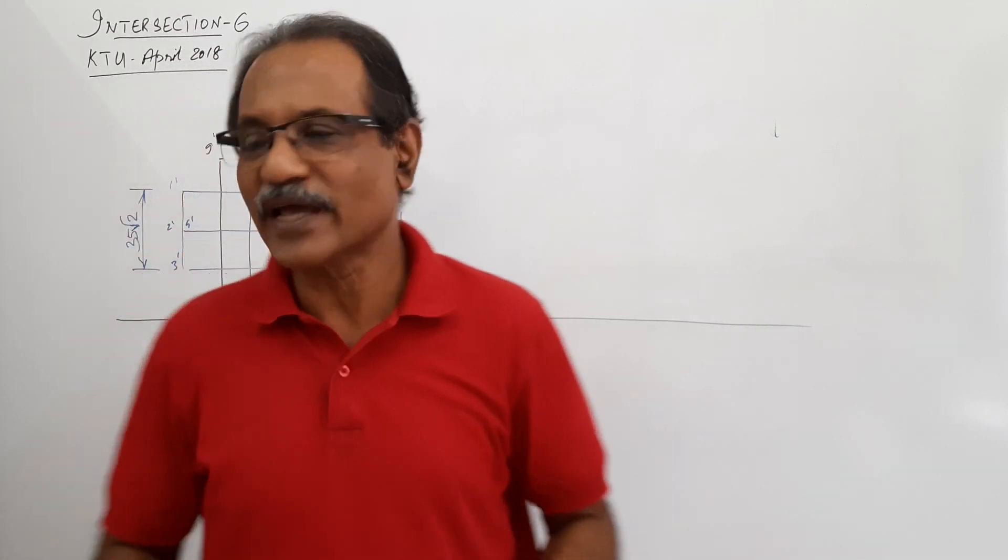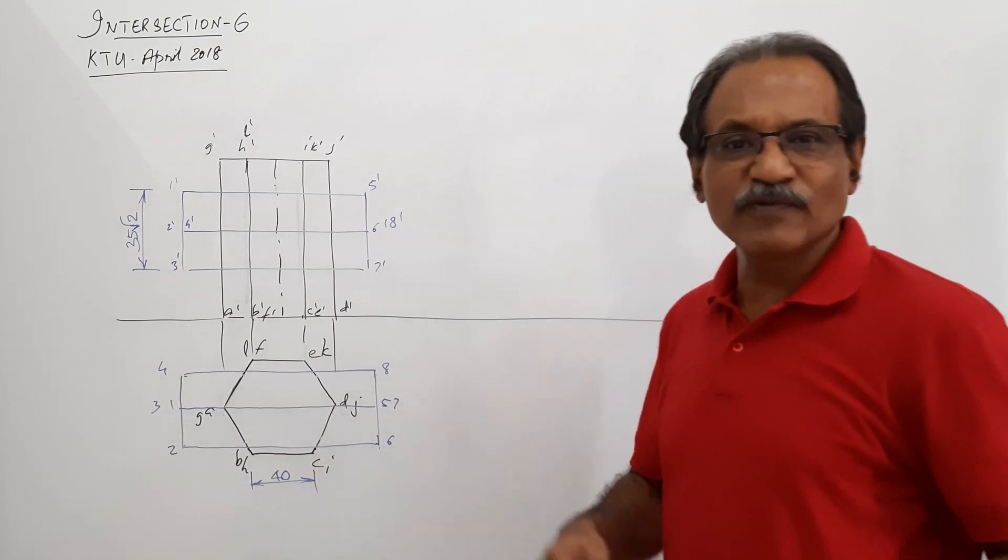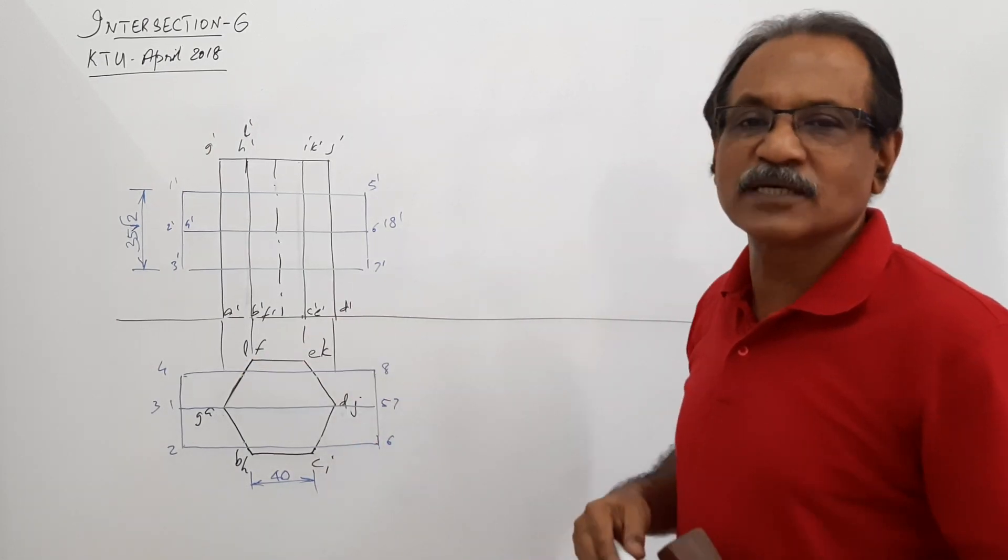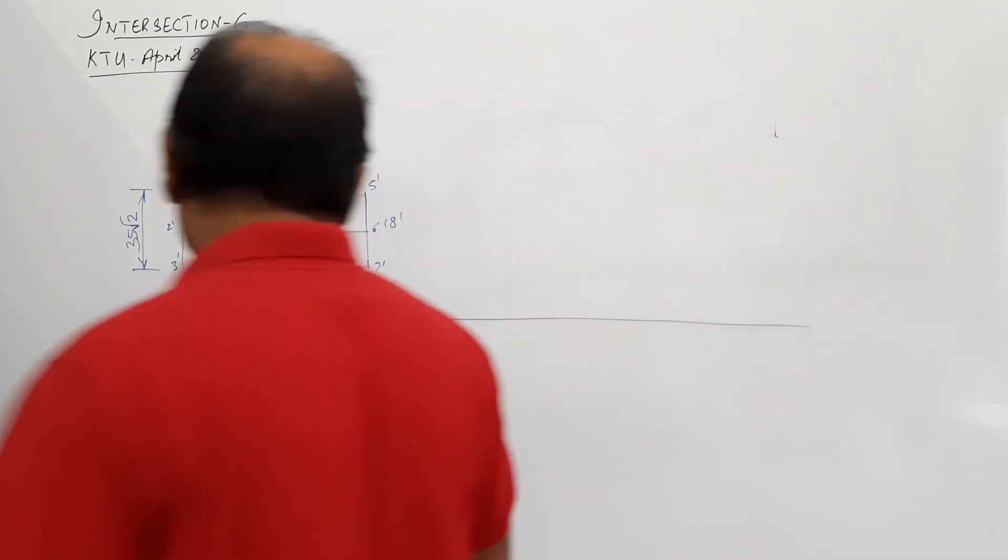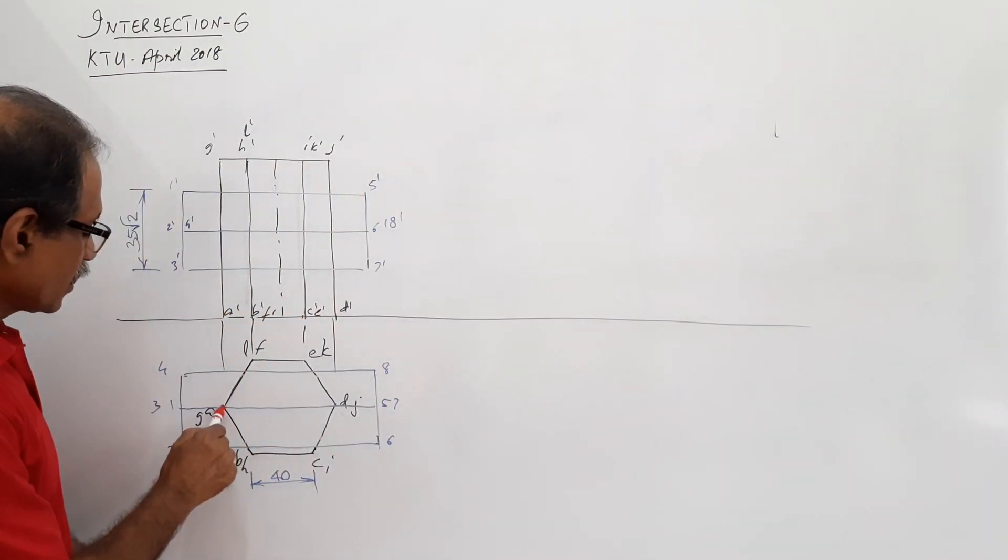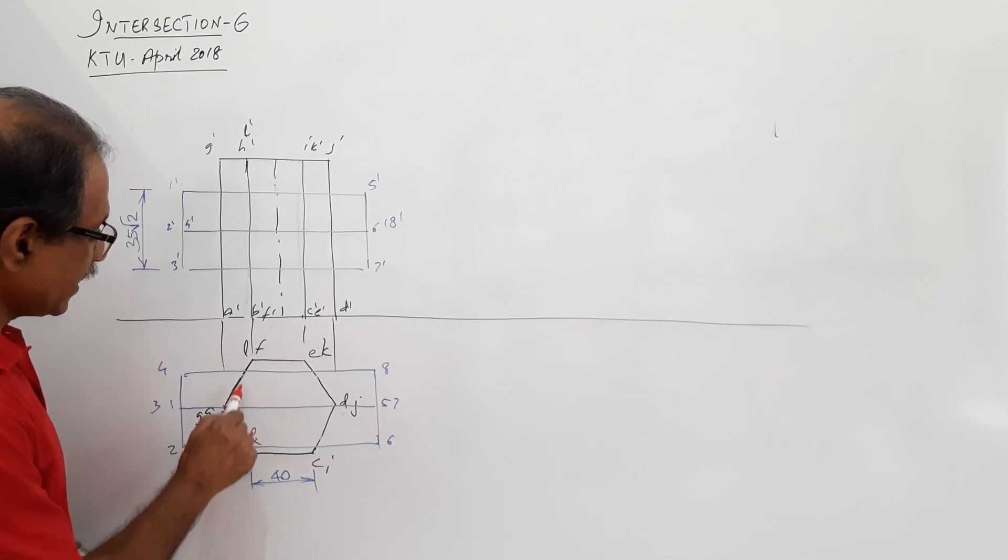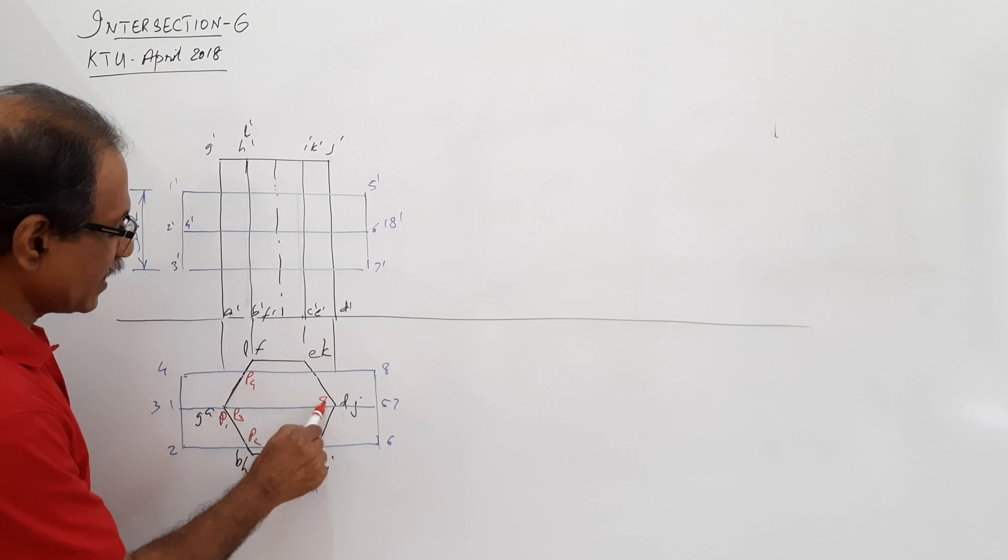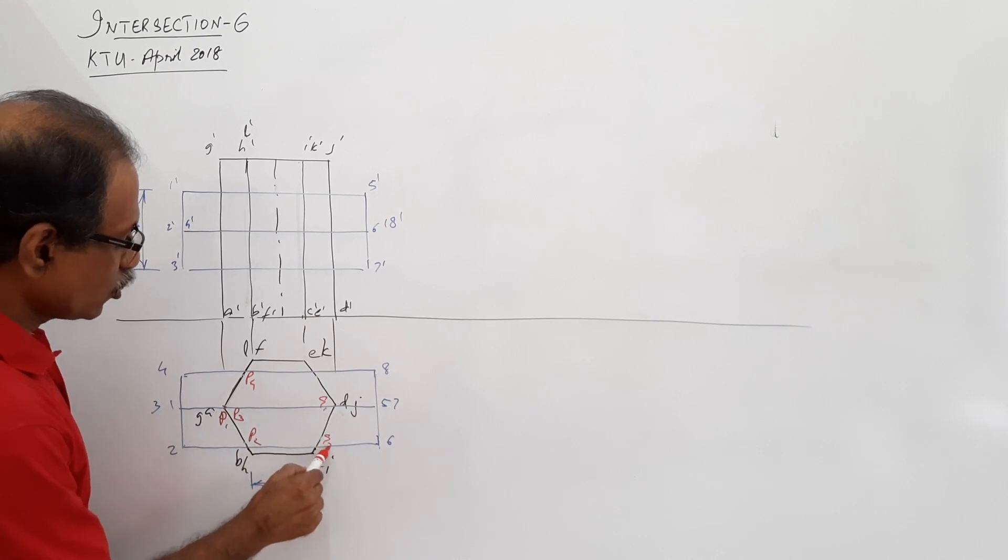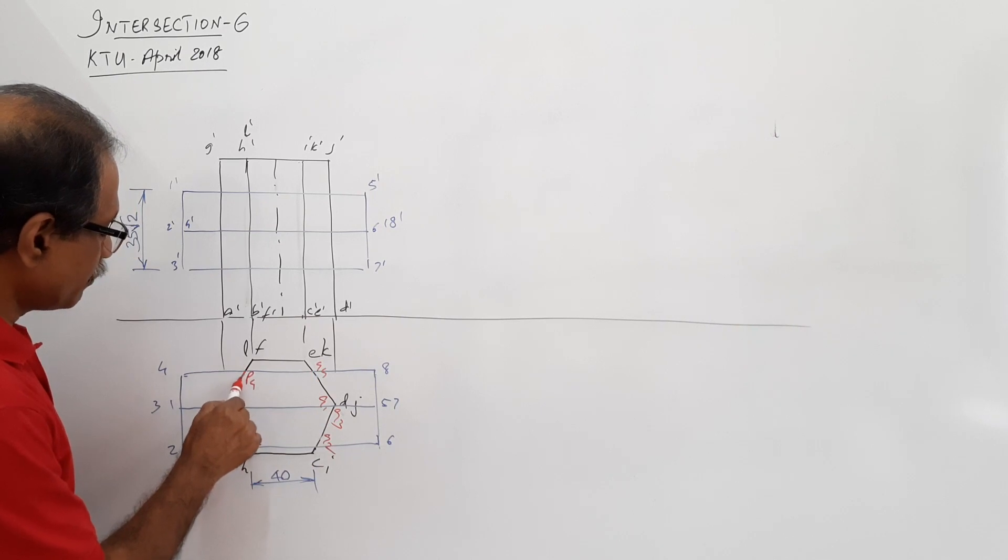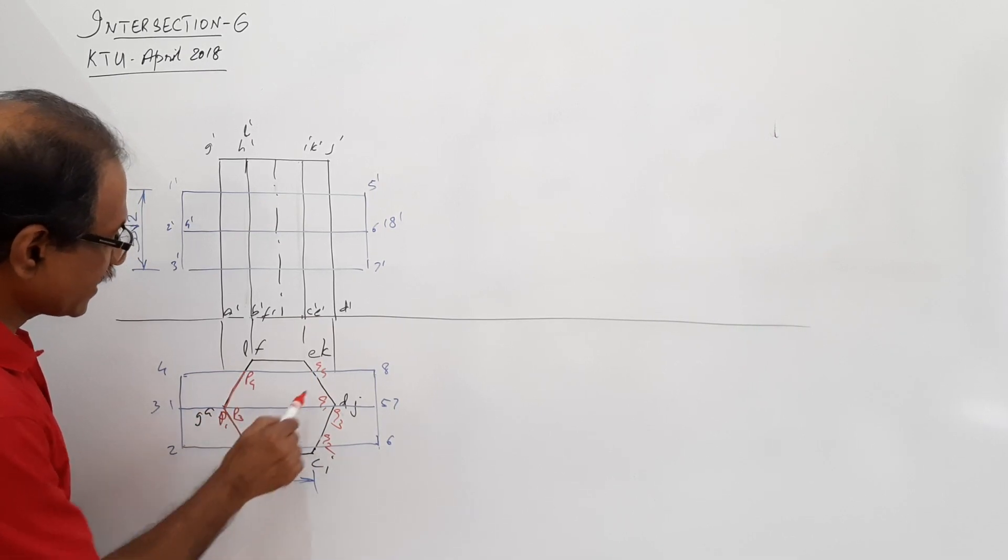Now let us mark the points where the horizontal edges of the square prism cut the vertical prism. This is P1, this is P2, this is P3, this is P4. Similarly Q1, Q2, Q3, Q4. You can connect them to represent the intersection curve in the plan.